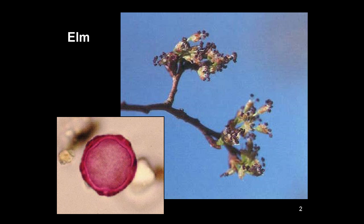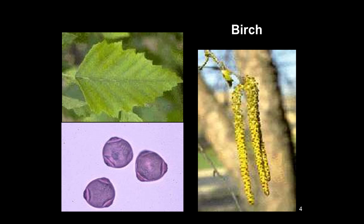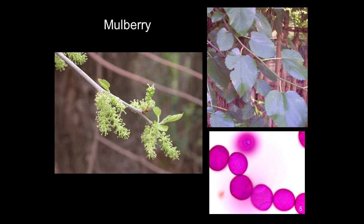Here are several examples of trees that produce small, inconspicuous flowers and give rise to airborne pollen. The first is elm. This is oak, birch, mulberry.